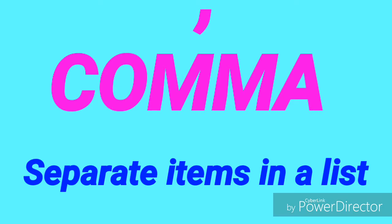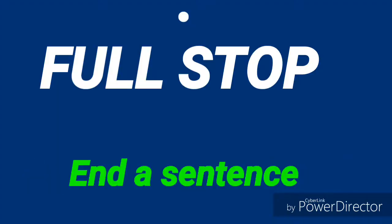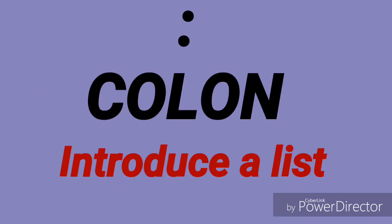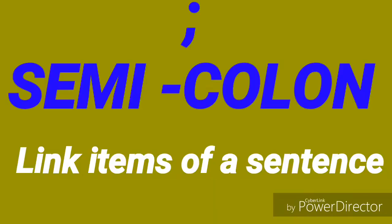Comma: separate items in a list. Full stop: end a sentence. Colon: introduce a list. Semi-colon: link items of a sentence.